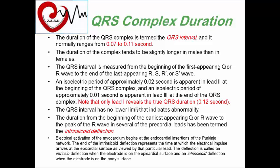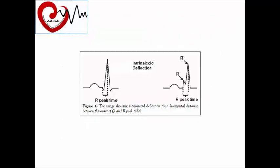Another important definition is the intrinsicoid deflection. It is the duration from the beginning of the earliest appearing wave of the QRS — either Q or R — to the peak of the R wave in the precordial leads. If there is an R-prime pattern, the measurement goes to the peak of the R-prime or the tallest R in the ECG.